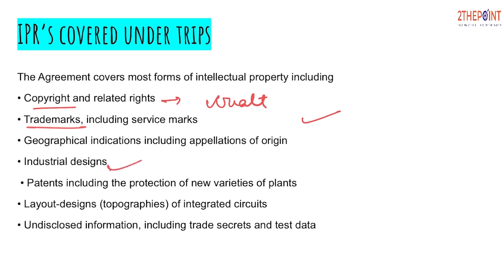Next is industrial designs. Then there is patents — under patents, any invention or discovery is protected. For example, if a person has devised a new thermometer that uses something other than mercury to gauge temperature, that new invention is given protection under patents. Next are layouts or designs of integrated circuits — certain companies have their own specified circuits that should not be replicated, as they hold protection under layout designs of integrated circuits.